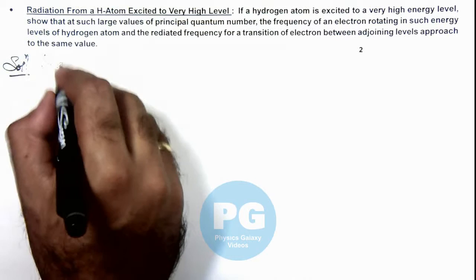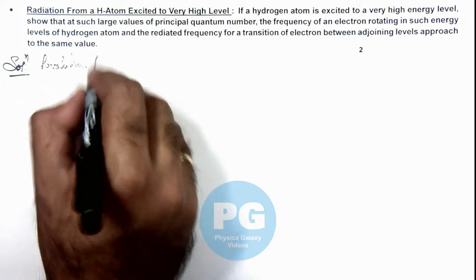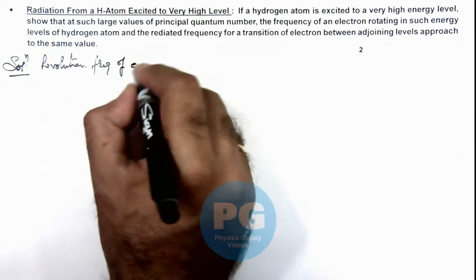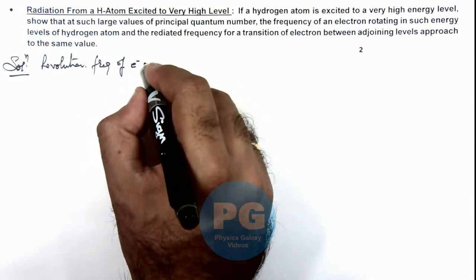And here the value of k is 1 by 4π epsilon not, which I am substituting as a constant here.